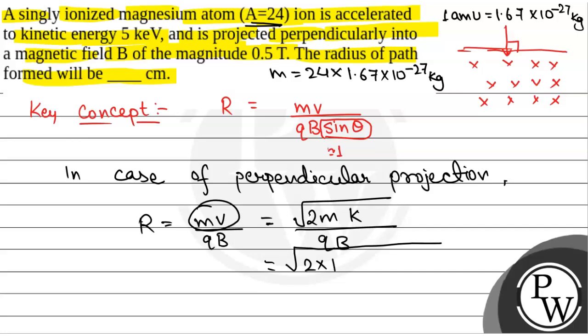So this will be square root of 2 into 24 into 1.67 into 10 to the power minus 27 kg, multiplied by kinetic energy. That is 5 kilo electron volt. And now we know that 1 electron volt is equal to 1.6 into 10 to the power minus 19 joules.